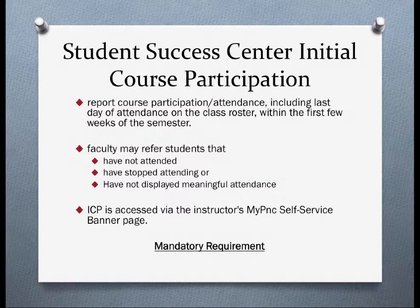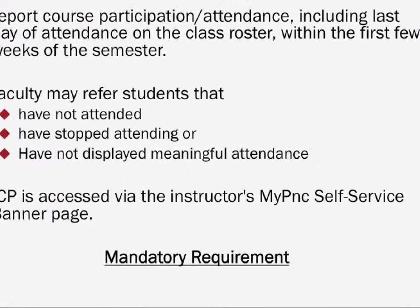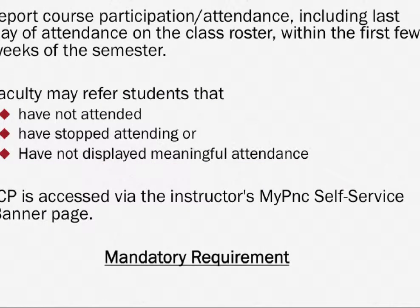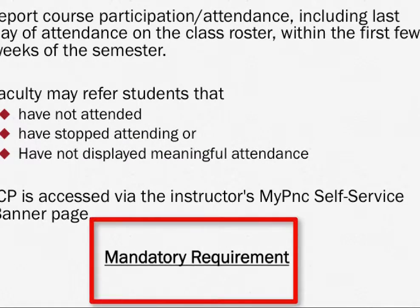Student Success Center Initial Course Participation (ICP) is a retention tool that enables faculty to report course participation and attendance, including the last day of attendance on the class roster, within the first few weeks of the semester. ICP allows the university to better meet the federal mandate on attendance participation requirements for financial aid, and also to develop better retention interventions for all students. Faculty may refer students who have not attended, who have stopped attending, or who are not displaying meaningful attendance, such as not logging into Blackboard Learn, not turning in homework, or taking quizzes. ICP is accessed via the instructor's MyPNC Self-Service Banner page. An email with screenshots and step-by-step instructions is sent out the first week of each semester by the Student Success Center to help faculty meet this mandatory requirement. ICPs must be submitted no later than the end of the fourth week of the semester.